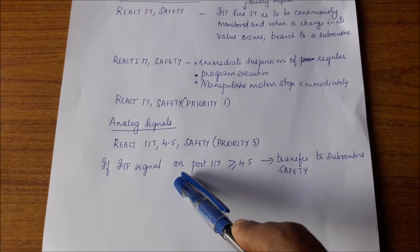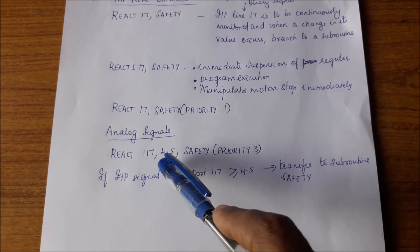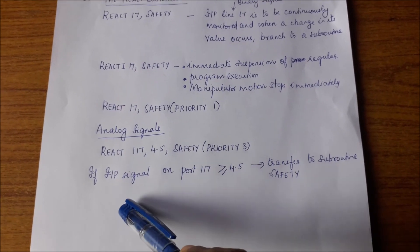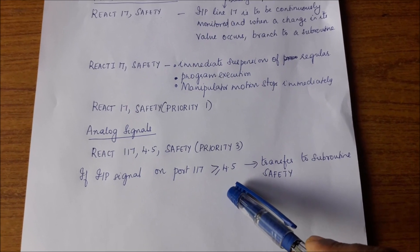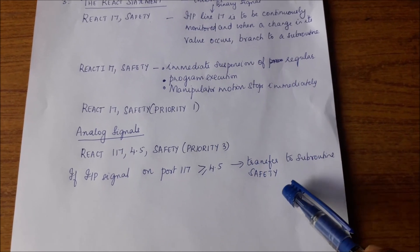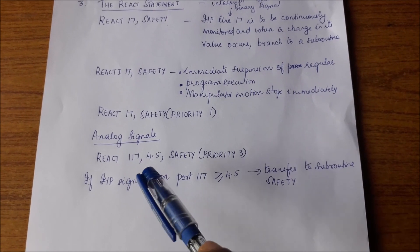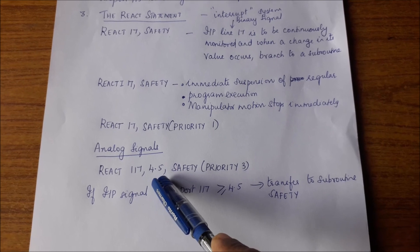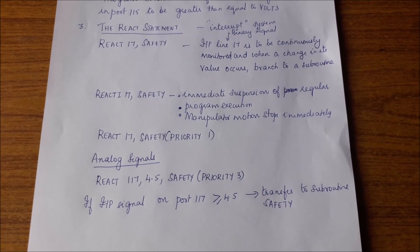In the same way, react statements can also handle analog signals. For example, react 117 4.5 safety priority 3 means: if the input signal on port 117 is greater than or equal to 4.5 volts, then transfer to the subroutine safety. That is the meaning of an analog react statement — if input signal 117 is greater than or equal to 4.5 volts, transfer to the subroutine safety.